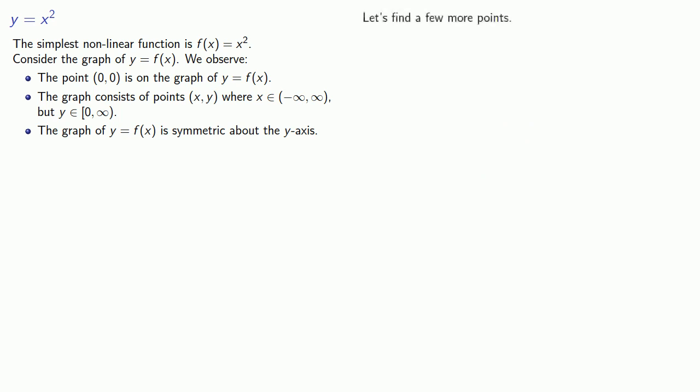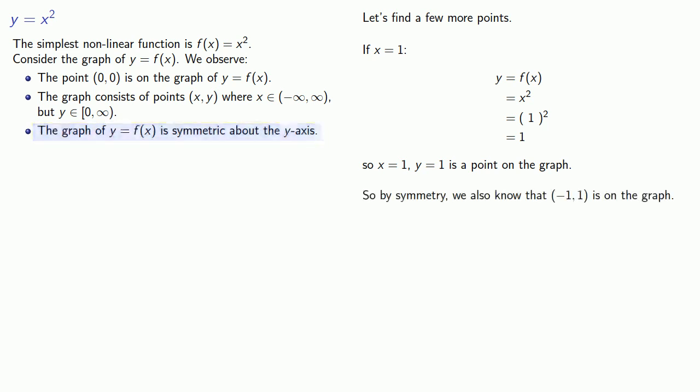Let's find a few more points. If x equals 1, y equals f(x), f(x) equals x squared, x equals 1. That tells me that y equals 1. So (1, 1) is a point on the graph. But because the graph is symmetric about the y-axis, we also know that (-1, 1) is also on the graph.